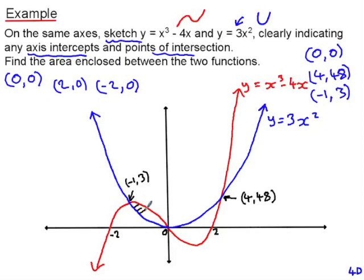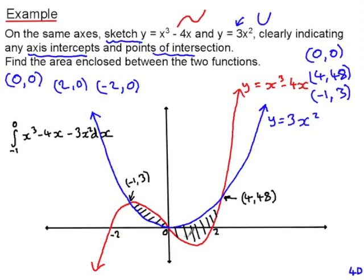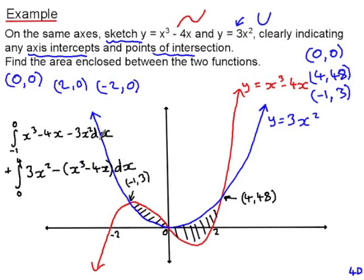To work out the enclosed area, integrate from negative 1 to 0. During this portion the red graph is above the blue graph, so the integrand is x cubed minus 4x minus 3x squared. The second enclosed area is found by integrating from 0 to 4, where the blue function is above the red function, so the integrand is 3x squared minus the quantity x cubed minus 4x. You can practise integrating by hand and check your answer with a calculator; the total enclosed area is 32.75 square units.